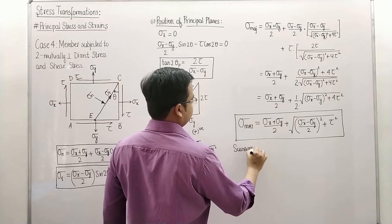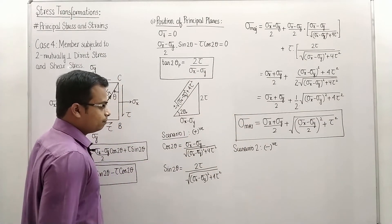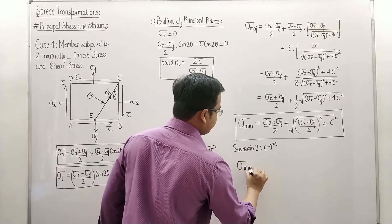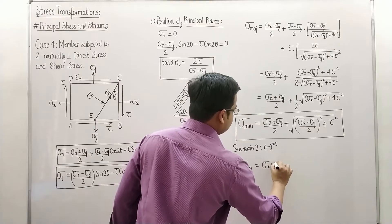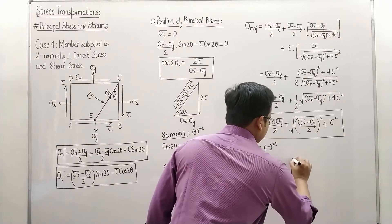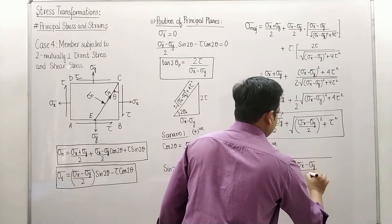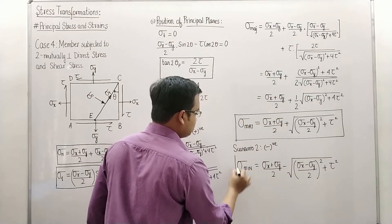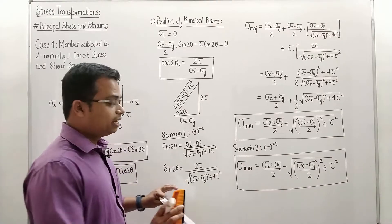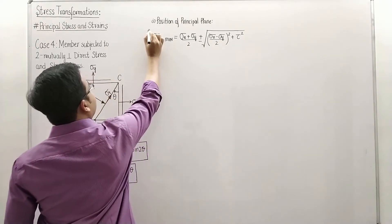For Scenario 2, taking the negative sign, the two values of cos 2 theta and sine 2 theta become negative. Substituting these into the equation gives the minor principal stress: sigma_minor = (sigma x + sigma y)/2 − √[((sigma x − sigma y)/2)² + tau²]. In condensed form, the ± sign distinguishes major from minor: positive for major, negative for minor.